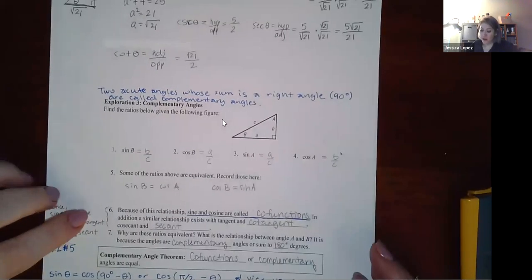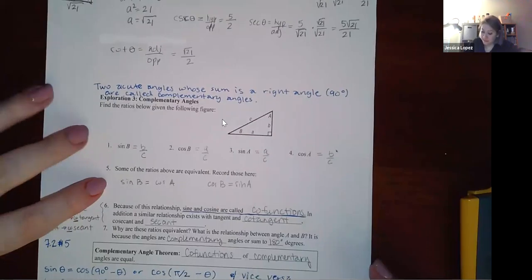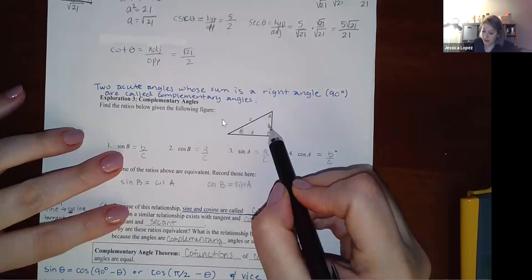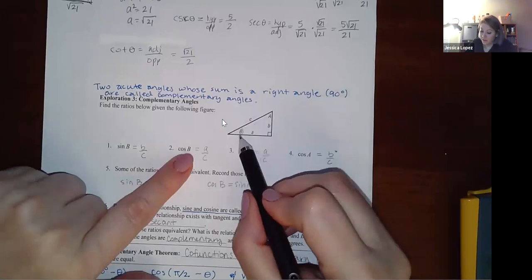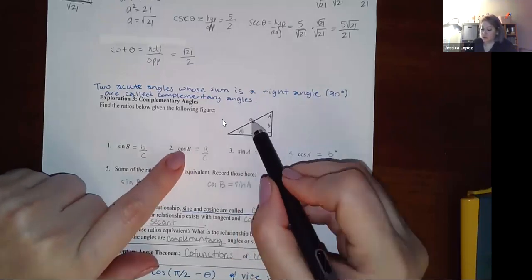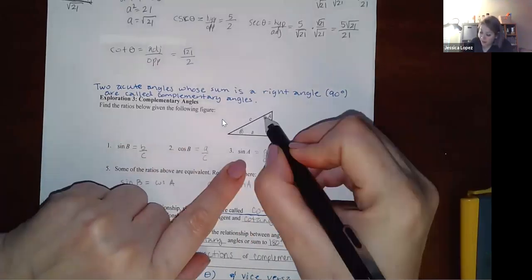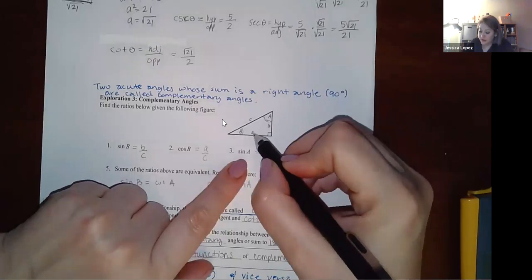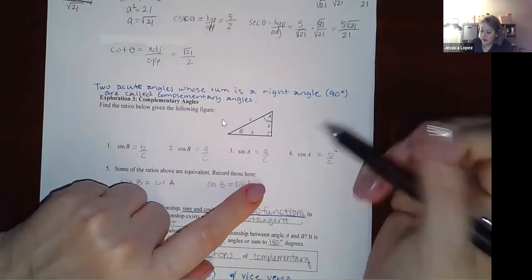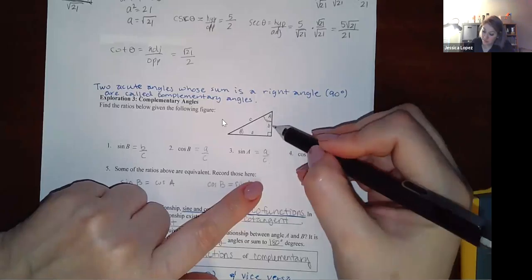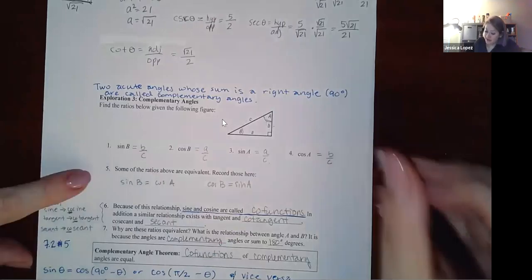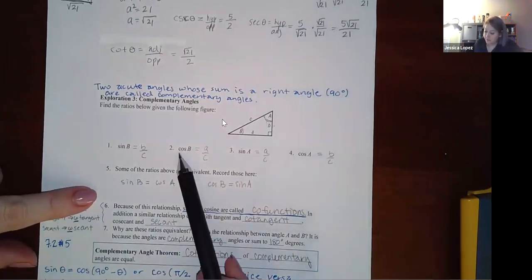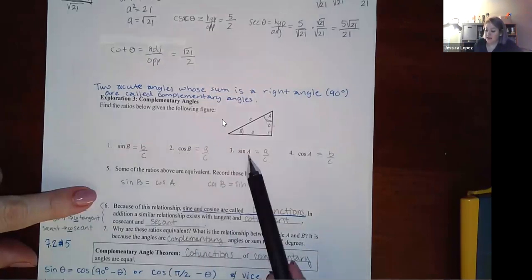Considering complementary angles: if B is my angle, sine of B = opposite/hypotenuse = b/c, and cosine of B = adjacent/hypotenuse = a/c. When A is my angle, sine of A = a/c and cosine of A = b/c. Notice that sine of B equals cosine of A, and cosine of B equals sine of A — both equal b/c and a/c respectively.